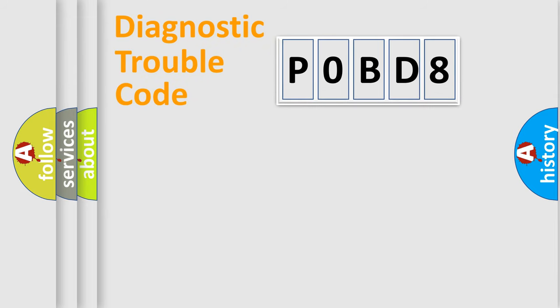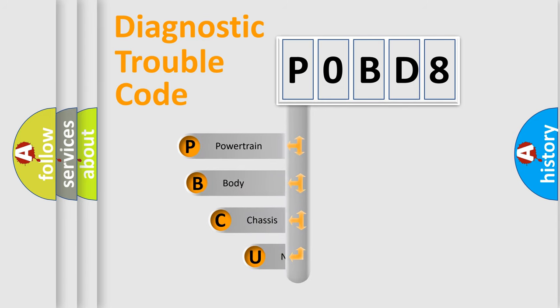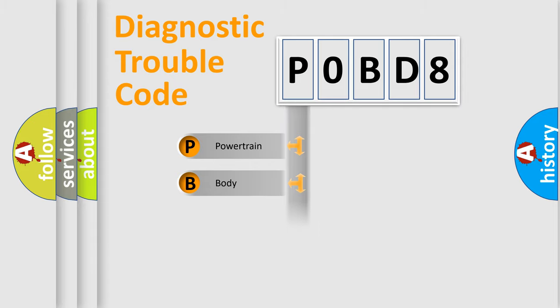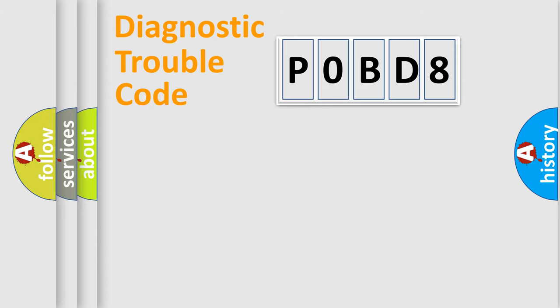First, let's look at the history of diagnostic fault code composition according to the OBD-2 protocol, which is unified for all automakers since 2000. We divide the electric system of an automobile into four basic units: Powertrain, Body, Chassis, and Network. This distribution is defined in the first character of the code.